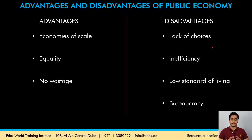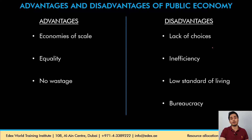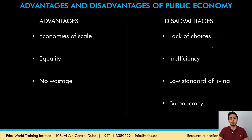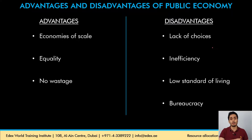Coming to the disadvantages of a planned economy: there would be a lack of choices for consumers because consumer demand is not kept in mind. When the government is in control of resources, they try to fulfill their own economic aims rather than the wishes of individual members of society. For example, if the government's aim is to achieve equality, they will produce the same set of goods for all regardless of individual preferences. If their aim is to minimize pollution, they will not produce goods that lead to high pollution, causing consumers to miss out.